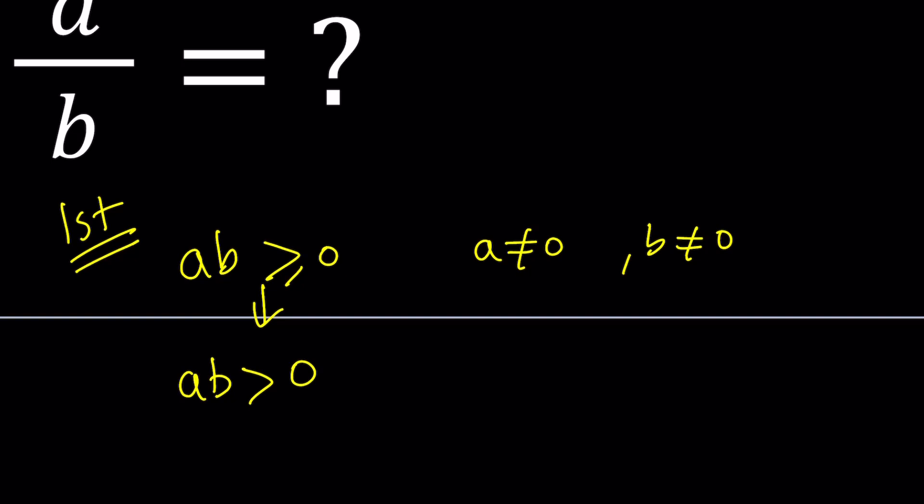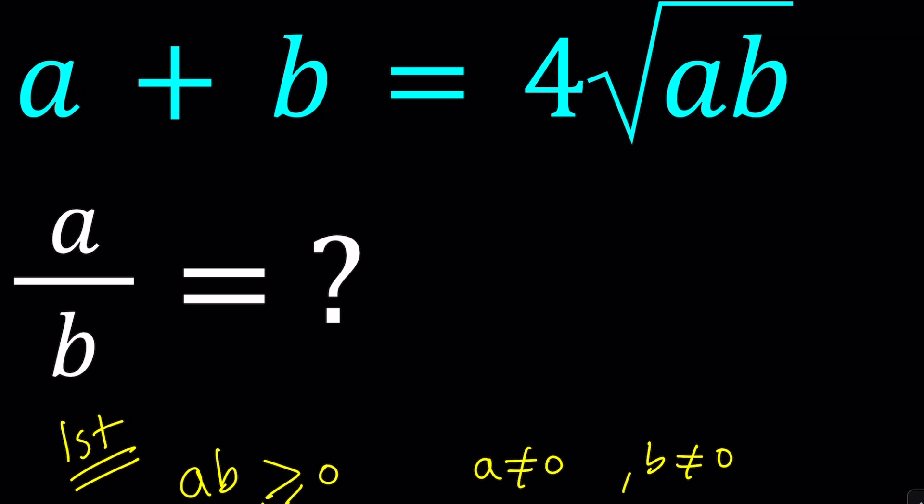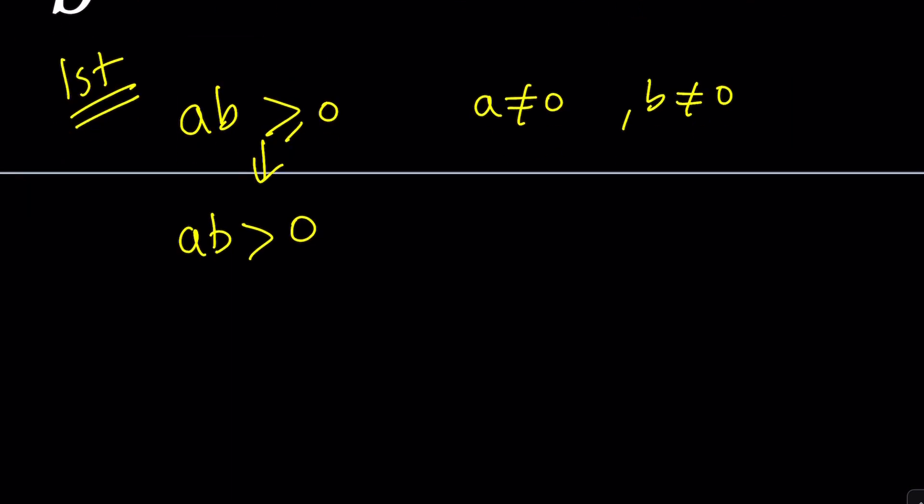Consider manipulating our equation. I would like to take away 4 square root of AB from both sides. In other words, bring this to the left-hand side, and then make it like a full equation. I was going to say quadratic, but this is not quadratic yet.